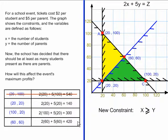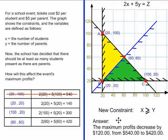The new answer to the situation is 420. But I have to be careful how I answer the question with this type of problem. The question was, how will this affect the event's maximum profits? So it's not enough to just say the maximum profits are 420. You have to say what the effect was. The maximum profits have decreased by $120 from the old answer of 540 to our new answer of $420, and this will be achieved by inviting 60 students and 60 parents to the event.